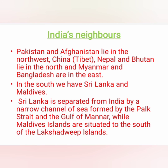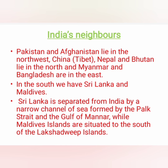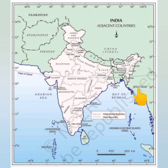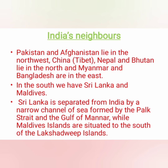The next topic is about the neighboring countries of India. India occupies an important strategic position in South Asia. India has 28 states and 8 union territories. India shares its land boundaries with Pakistan and Afghanistan in the northwest, and China, Tibet, Nepal and Bhutan in the north, and Myanmar and Bangladesh in the east. Our southern neighbors across the sea consist of two island countries, namely Sri Lanka and Maldives. Sri Lanka is separated from India by a narrow channel of sea formed by Palk Strait and the Gulf of Mannar. Finally, India has strong geographical and historical links with her neighbors.